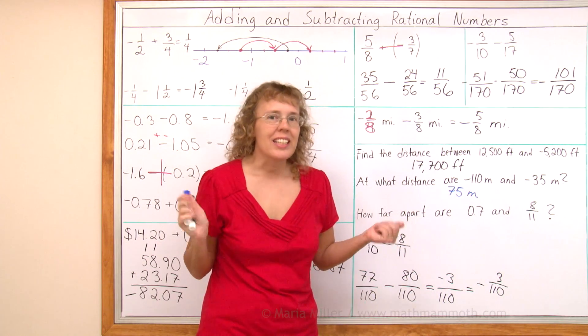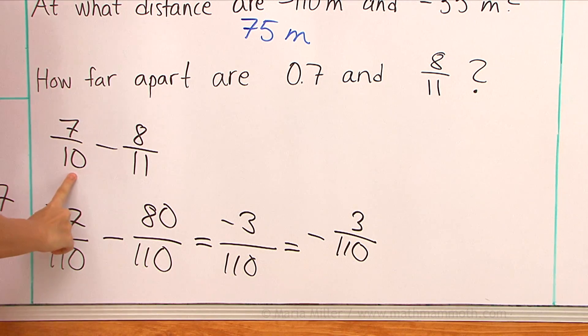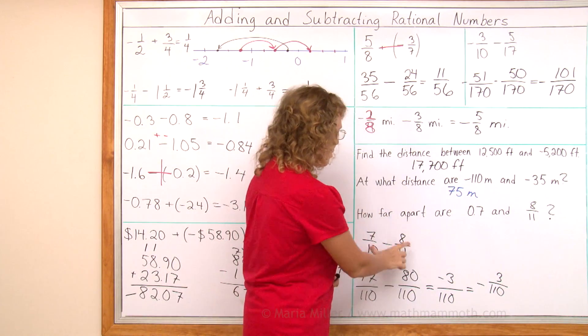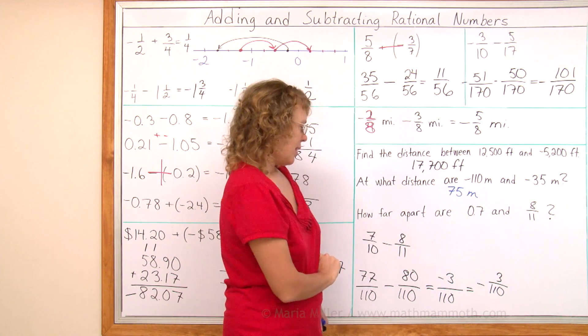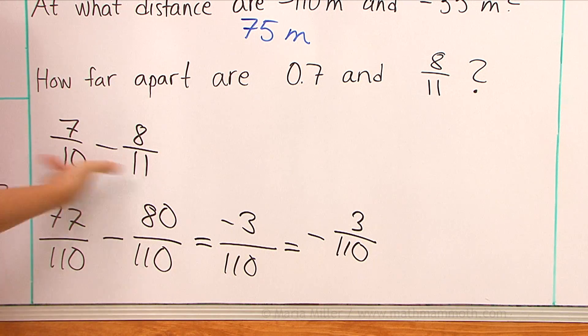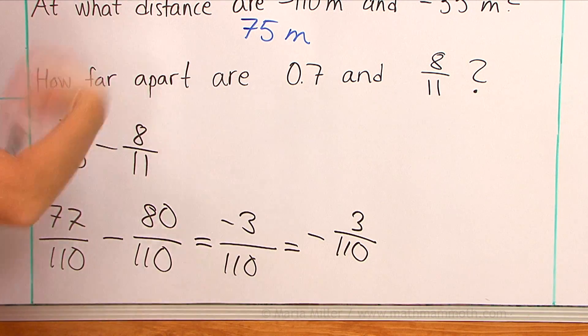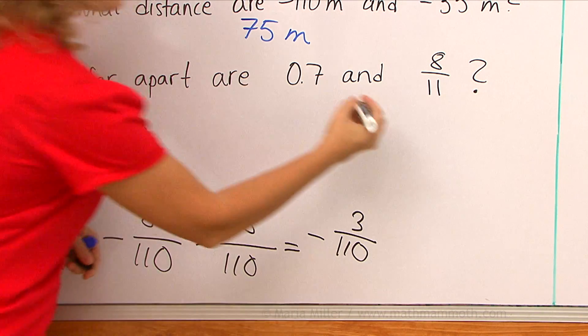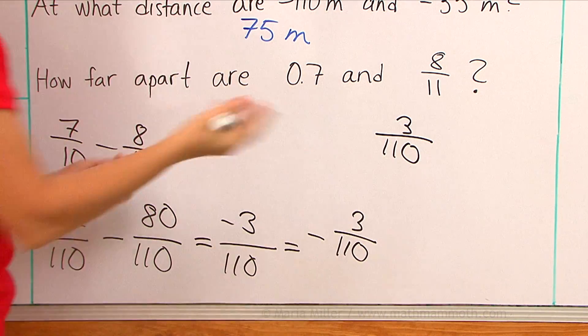What went wrong, so to speak, is that I accidentally subtracted the smaller minus the greater number. If I had thought about it, if I had known which one is the greater number, I would have subtracted them the other way. But the answer, if I had subtracted this the other way, I would have gotten eighty minus seventy-seven here. So the answer, I can still figure out the answer from this one without having to redo the whole subtraction. I can just write it as three over one-hundred ten. That's how far apart they are.